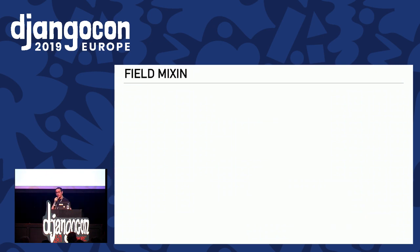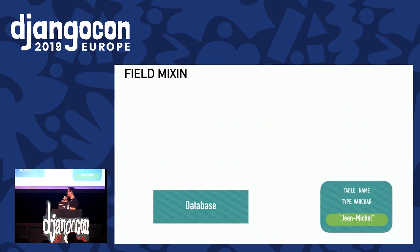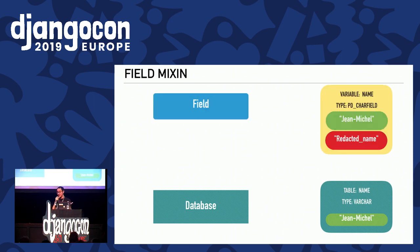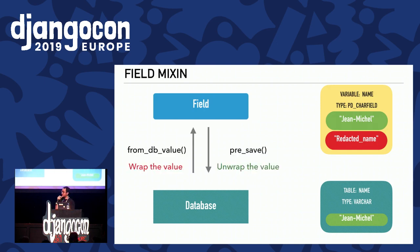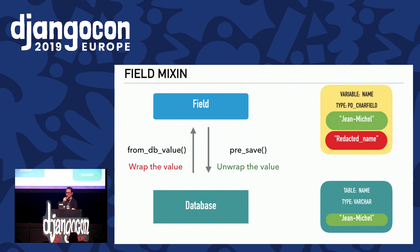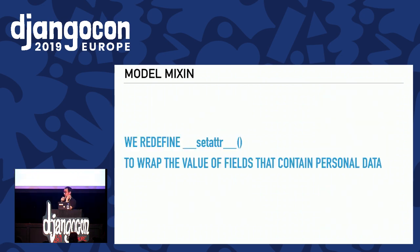For the fields in the database, we have a lot of customers, for instance a table with varchar containing Jean-Michel. I need to define a new mixin. This mixin redefines two methods: from_db_value, which wraps the value, and pre_save, which unwraps the value from the field to the database. We also have a model mixin that redefines __setattr__ to wrap the value of fields that contain personal data. So if I do customer.name = 'Jean-Michel', that's the method that gets called.